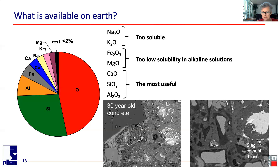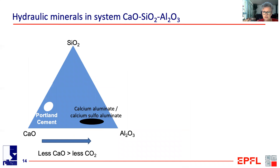So we come down to a system of just three oxides, which of course is very well known and has been studied for hundreds of years. In this system, we know there are only two regions where we have hydraulic materials which can be used to produce cement: the region of calcium silicates — which is what we call Portland cement — and the region of calcium aluminate and calcium sulfoaluminate cement.